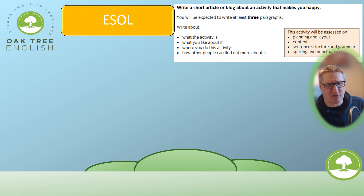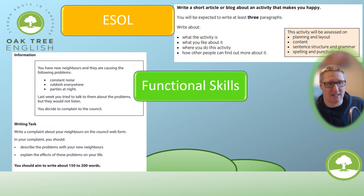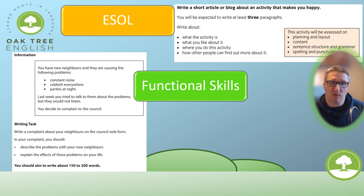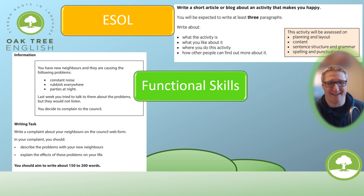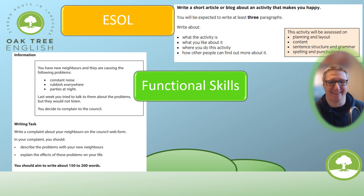For functional skills, here's a Pearson Edexcel example. It's fairly similar — it tells you what to write about: describe the problem with your new neighbours and explain the effects on your life. It gives you extra information: you have new neighbours causing constant noise, rubbish everywhere, and parties at night. Last week you tried to talk to them but they would not listen. You decide to complain to the council. You're asked to write a complaint on a council web forum.